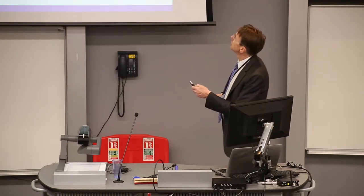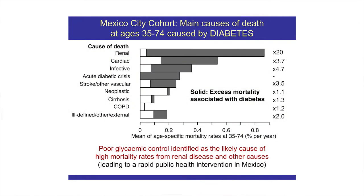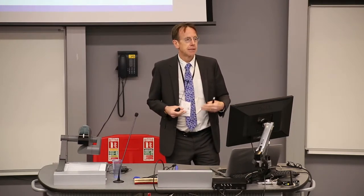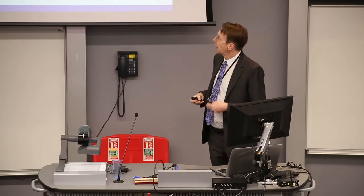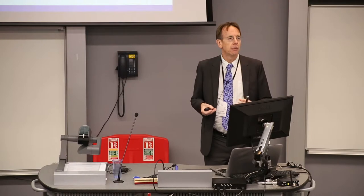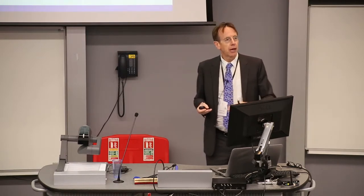In absolute terms, about 40% of deaths in Mexico are due to diabetes, with a distribution quite different from richer countries — a very substantial proportion relating to death from renal causes, because in a place like Mexico if you get renal failure, the opportunity for dialysis and transplant is not there. Although diabetes is diagnosed, it's not well controlled: HbA1c levels are much higher than in western populations, and cardioprotective drugs like statins and blood pressure-lowering treatments are not being used extensively — going back to Chris Whitty's comment about comorbidities and incremental risk reduction.